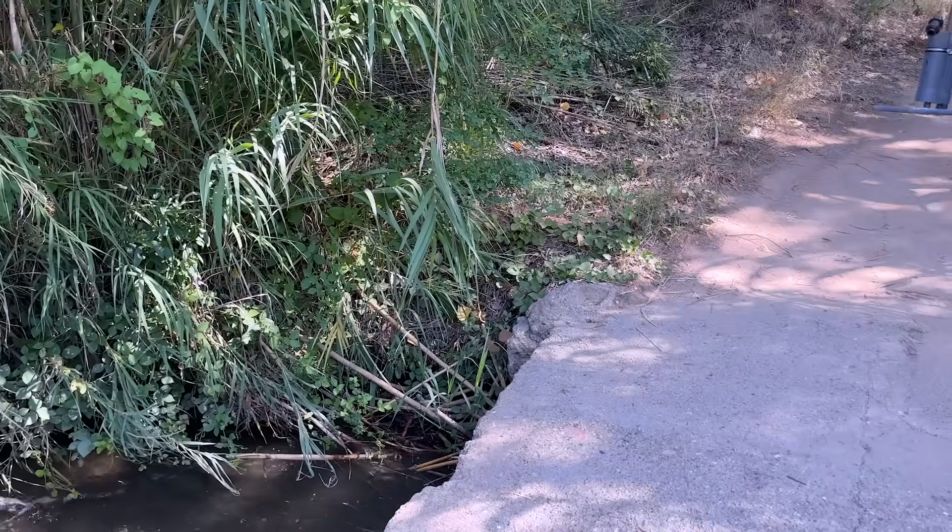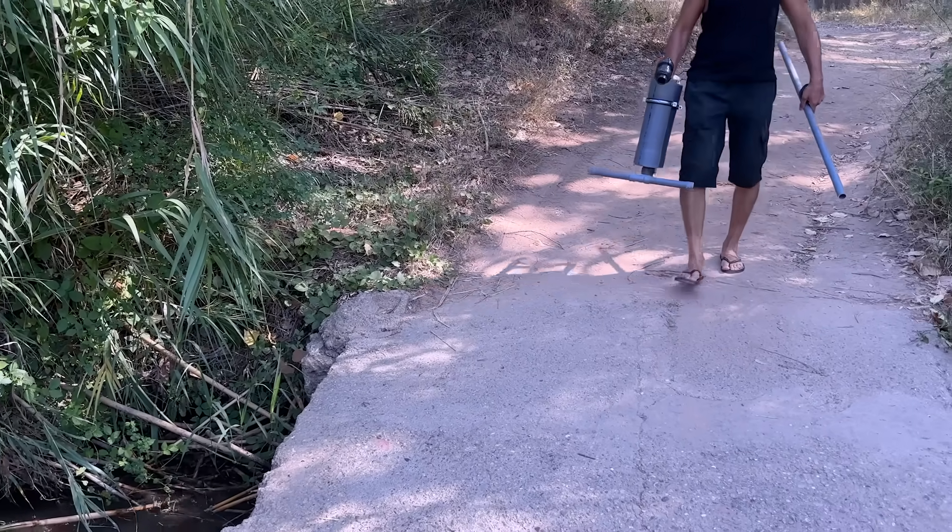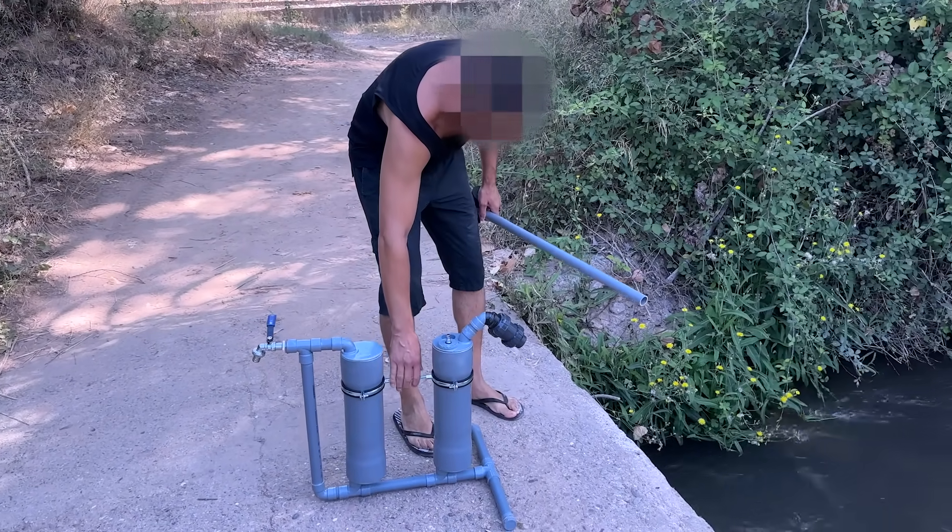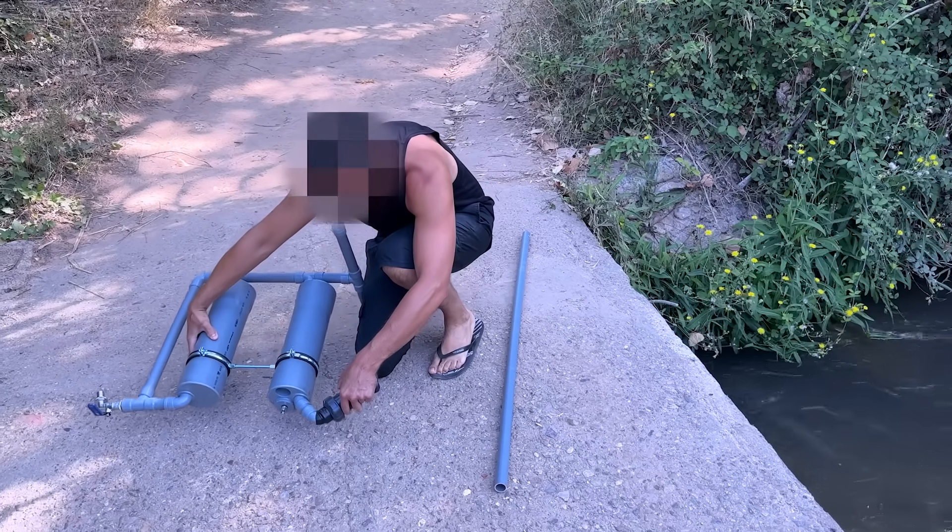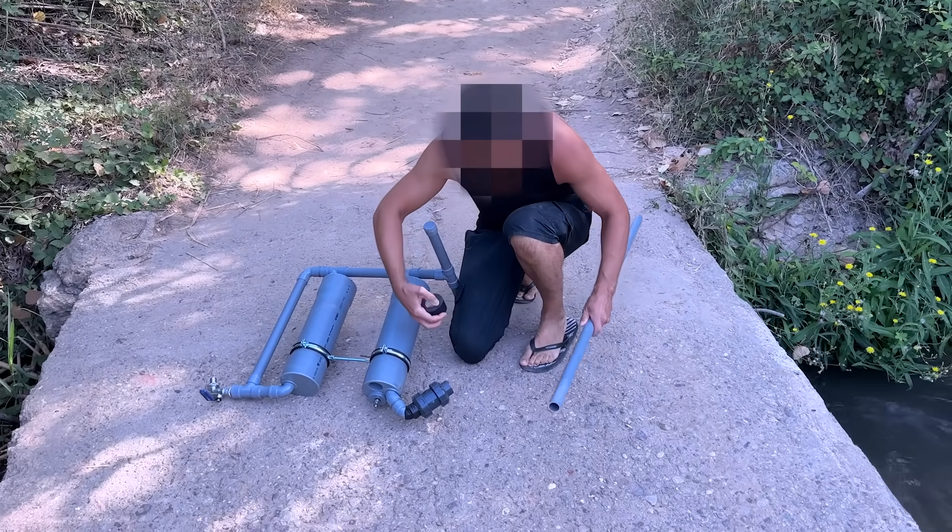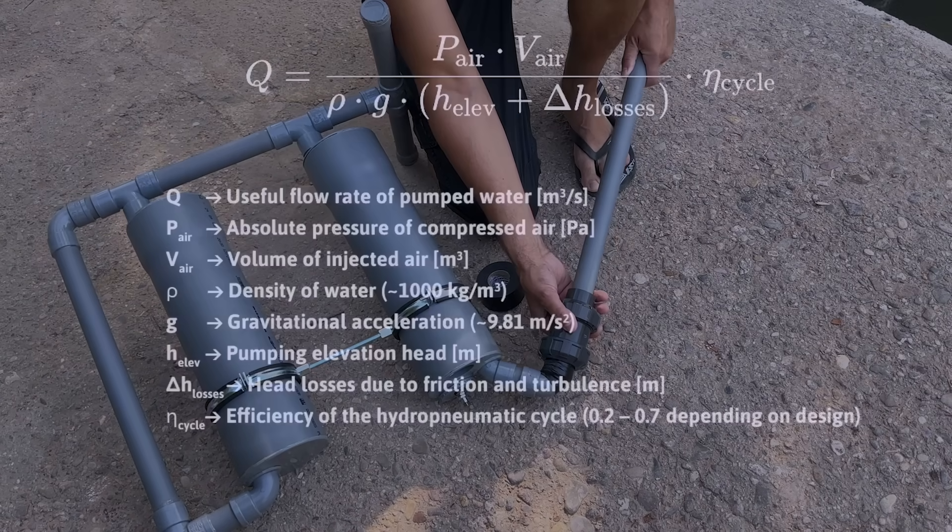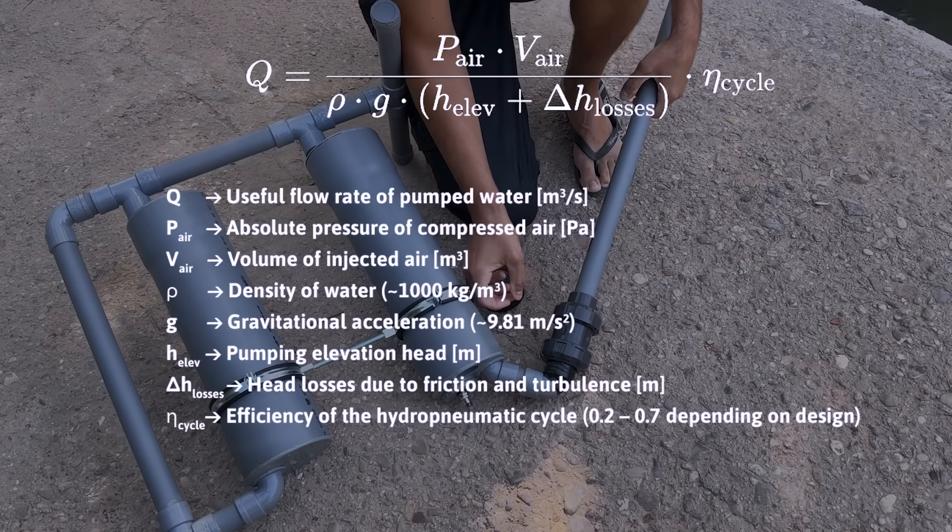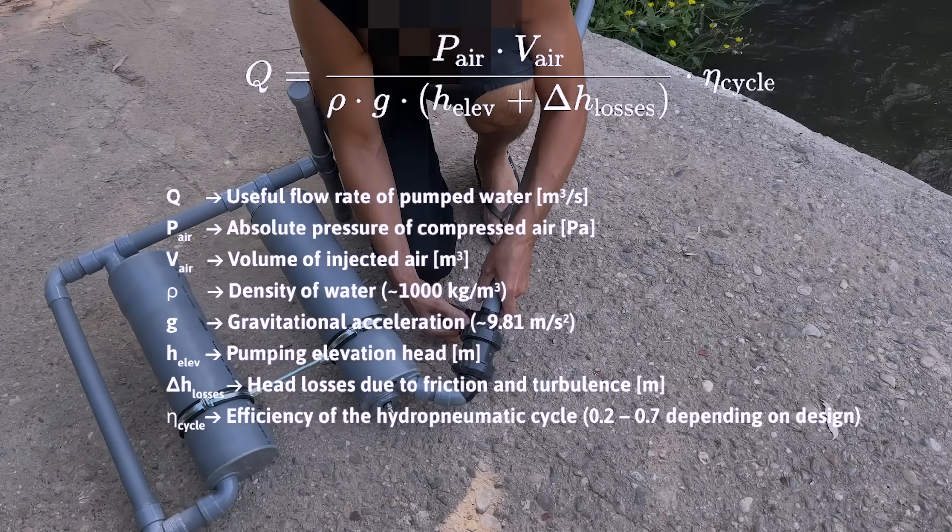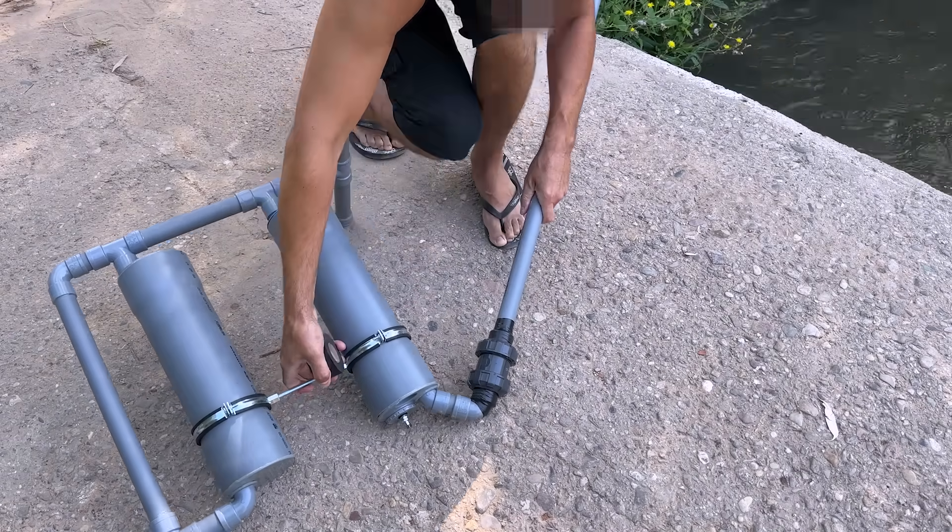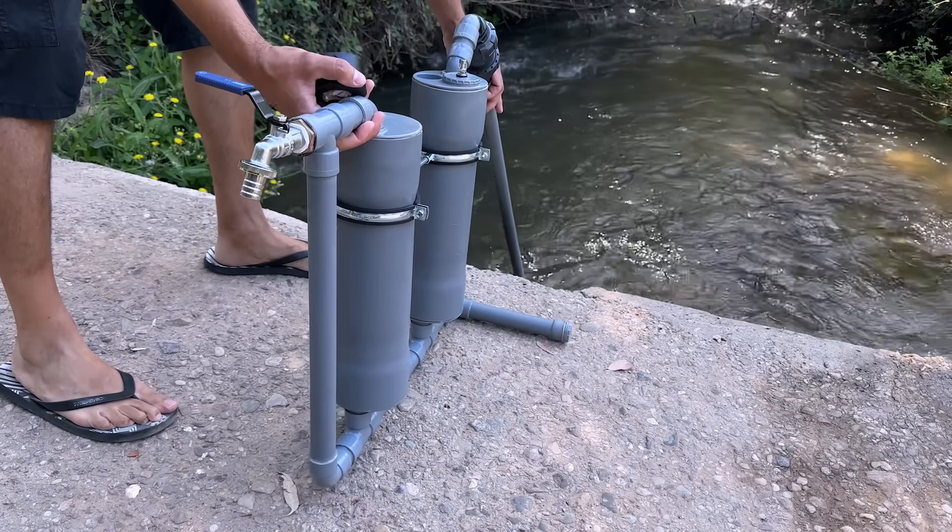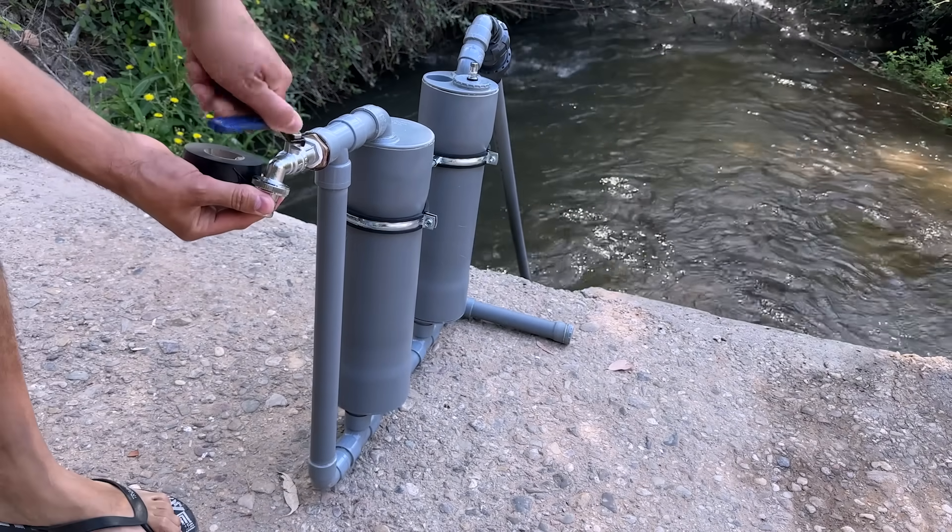The system is based on an energy balance where compressed air pressure propels a useful volume of water to a given height, adjusted for system losses and the efficiency of the hydropneumatic cycle. This formula summarizes how the HCPL-X transforms pneumatic enthalpy into hydraulic flow. This is a pulsating hydropneumatic system that recycles its own internal energy through pressure waves and controlled cavitation phenomena.